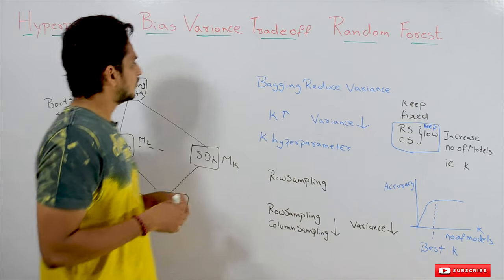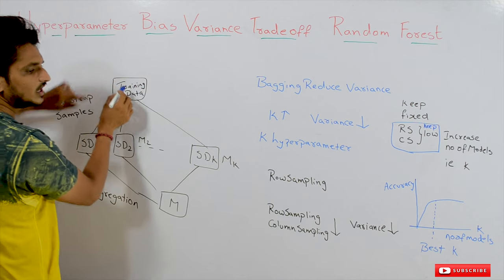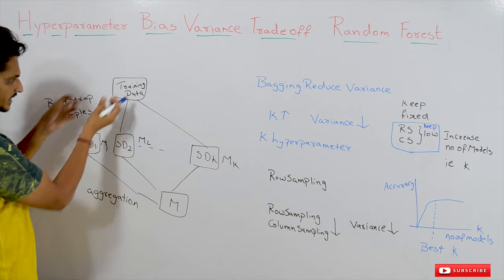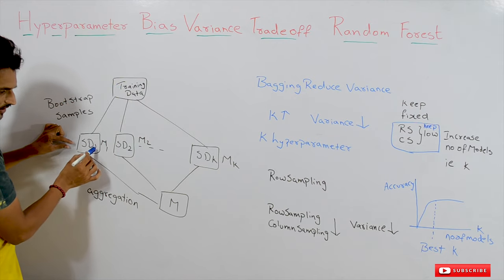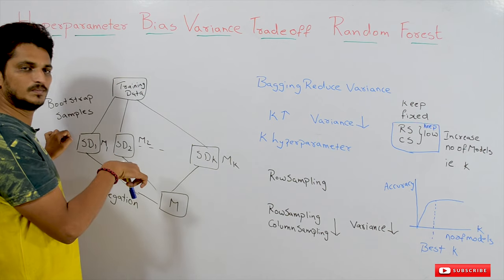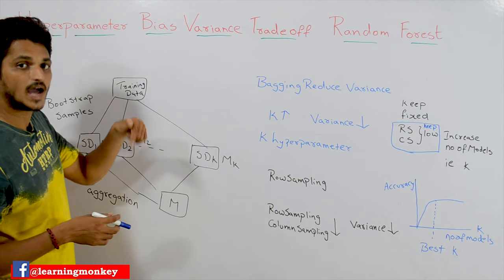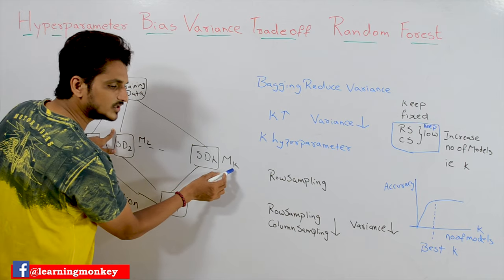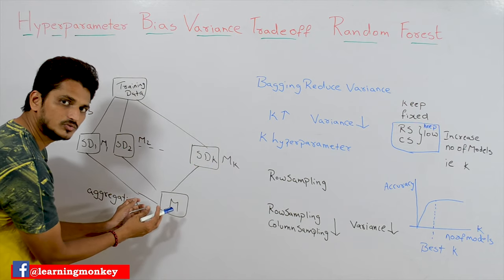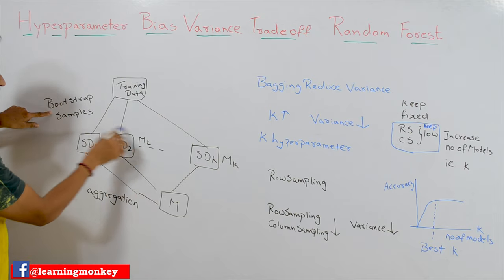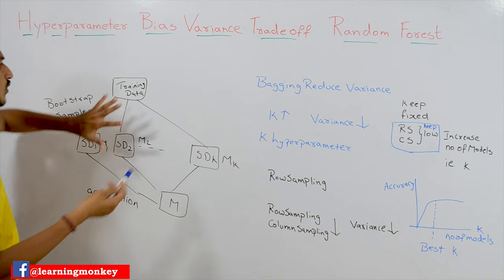Coming to today's class, let us refresh the concepts of random forest first, then we go into the concept of hyperparameter. In random forest, what we do is we collect some random samples using row sampling and column sampling. On that sample data 1, we construct a high variance decision tree. Same way, we collect some row samples and column samples, make it sample data 2, and construct another high variance decision tree. Like this we construct k decision trees — k models. For prediction, we aggregate the predicted values. This sampling method is called bootstrap sampling, and the overall method — bootstrap aggregation — is called bagging. This is what we do in random forest.